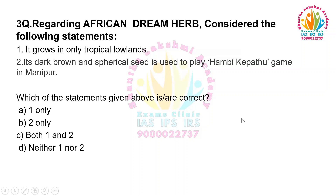So the answer is neither one nor two. Because it is grown in tropical lowlands along with coastlines and river banks and woodland, not only tropical lowlands. And the spherical seed is used to play the Humbi Thambu game in Assam, not Manipur.